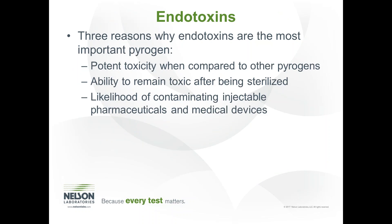The three reasons that endotoxin is the most important are its potent toxicity when compared to other pyrogens. The next most potent pyrogen is the peptidoglycan from gram-positive bacteria, and it is something along the lines of 50,000 times less pyrogenic than endotoxin. Endotoxin is also a very stable molecule. It can resist almost all sterilization methods such as ethylene oxide or radiation. Typically, in order to remove endotoxin, it needs to be depyrogenated.